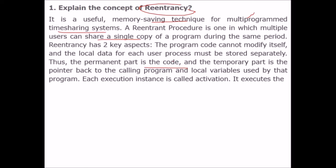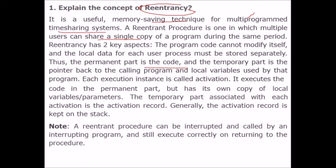Each execution instance is called an activation. It executes the code in the permanent part but has its own copy of local variables. The temporary part is associated with each activation, which is the activation record. Generally, the activation record is kept on the stack.